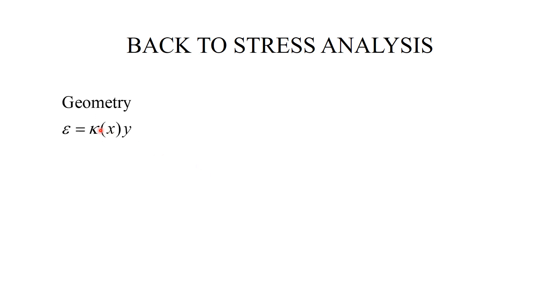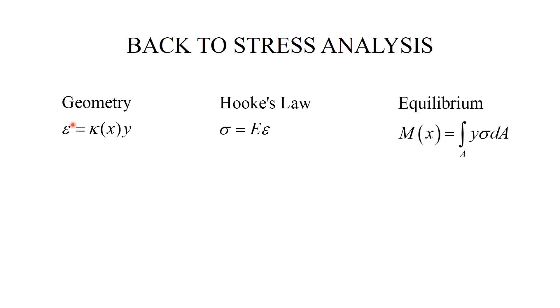To proceed further, let me briefly recall what we did to derive the stress. We used geometry — specifically the curvature — to get the strain in the beam fibers. Then we applied Hooke's law, and used equilibrium equations to establish that the resultant moment of the stress sigma is the internal moment. Putting it all together, we obtain the relationship sigma equal to MY over IZ. This was a stepping stone for deriving the expression for sigma.